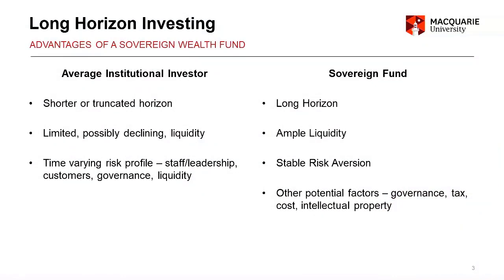The obvious differences between your average investor and a sovereign fund: the average investor has a truncated horizon. Even the big industry funds, despite the amount of capital going through them, can predict reasonably when their capital outflows will peak, particularly if you have a demographic pyramid. They definitely have limited liquidity. And we've seen that risk tolerance varies through time — that's why markets become overpriced or underpriced at different points in time.